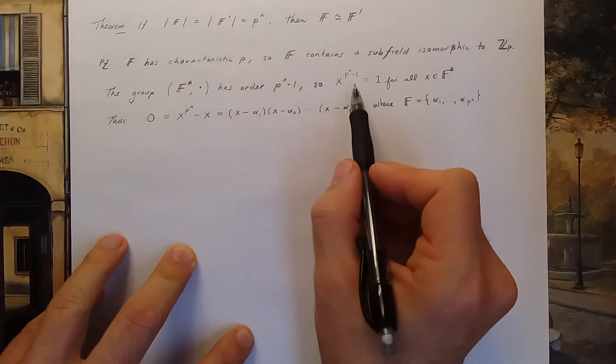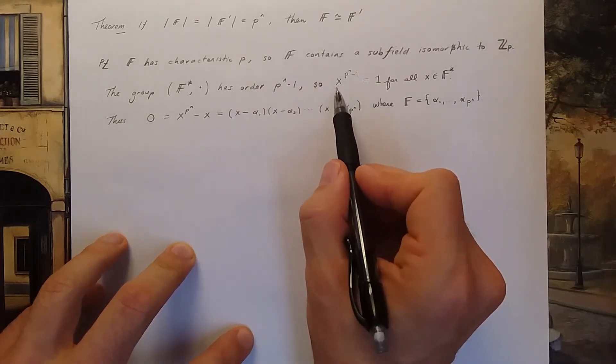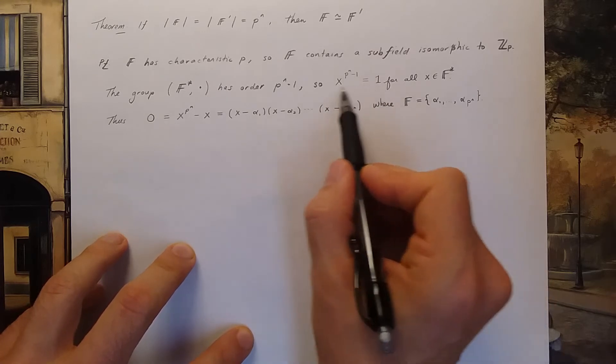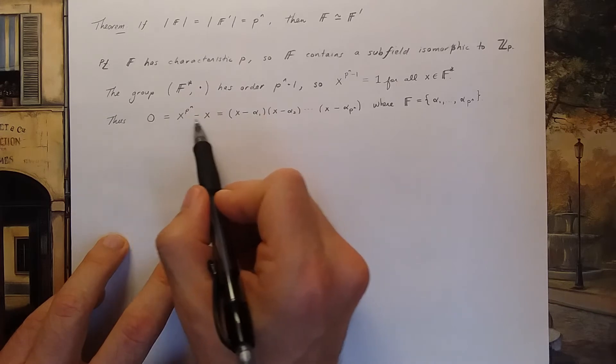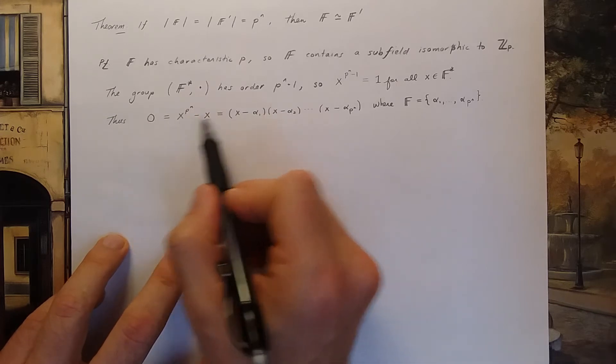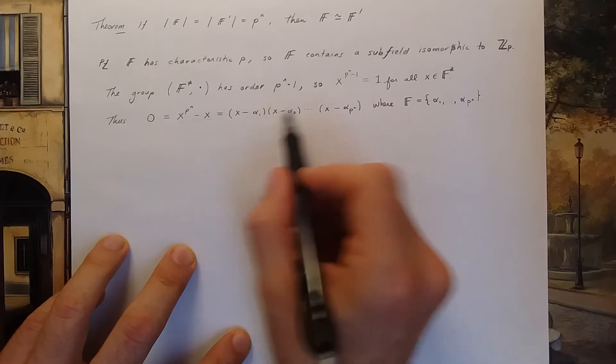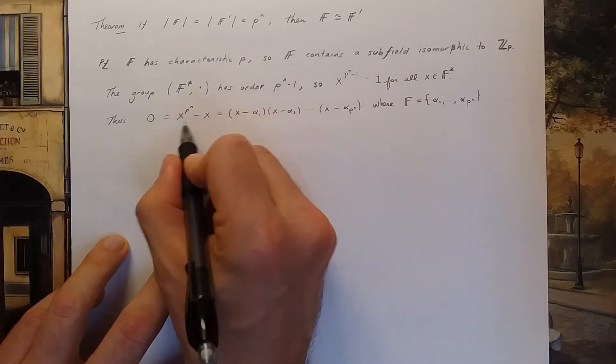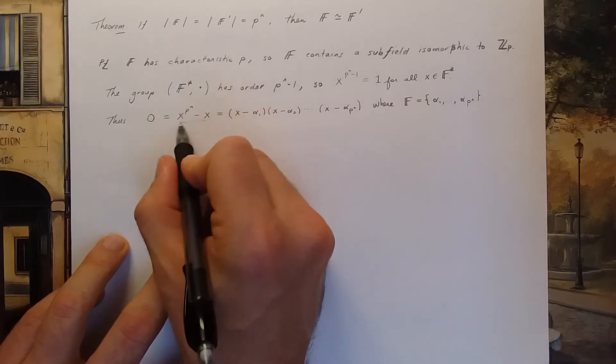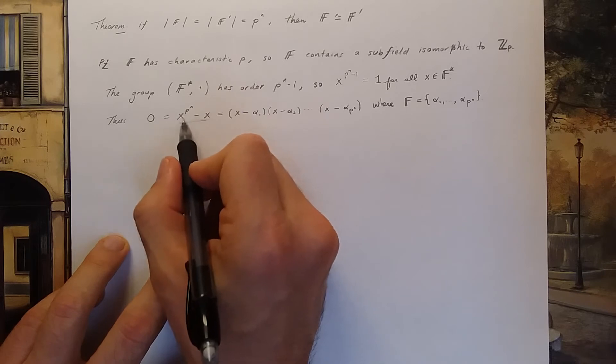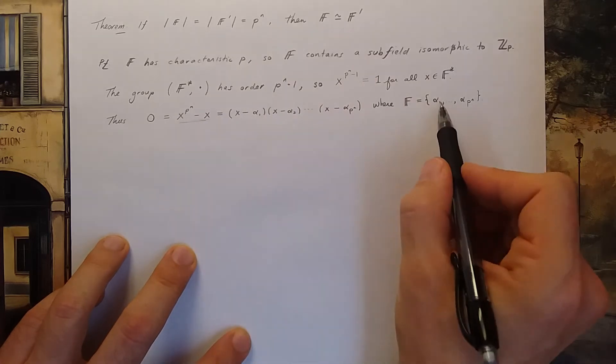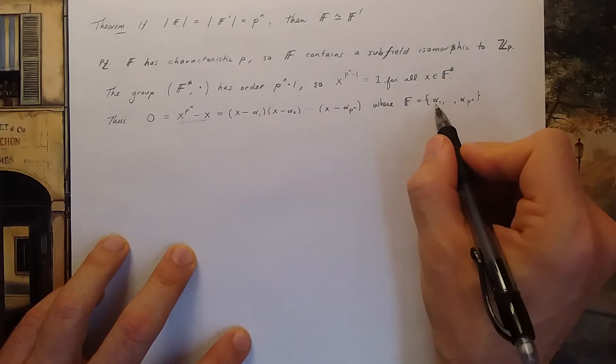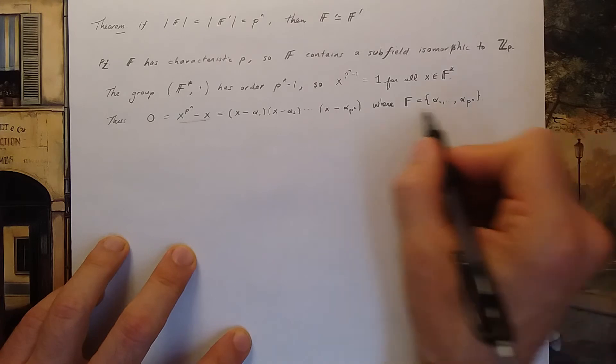So here's the logic again. This identity is true from group theory. So I subtract one and multiply by x and I get zero is equal to this which, since now this is a polynomial that has roots every element in the field, so I can factor it and write it as a product of linear terms where I just have the elements alpha one through alpha p n equaling my field.